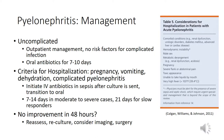Management for uncomplicated pyelonephritis can be handled outpatient as long as the patient has no risk factors for complicated infection, typically with a seven- to 10-day course of oral antibiotics. Criteria for hospitalization in complicated pyelonephritis include pregnancy and vomiting or dehydration — initiate IV antibiotics after cultures are sent, then transition to oral antibiotics. These patients typically need seven to 14 days of antibiotics for moderate to severe cases, or 21 days if the patient is slow to respond.